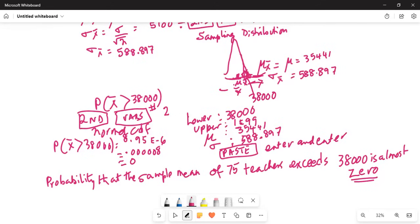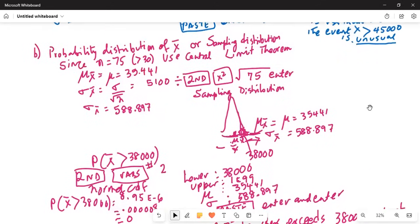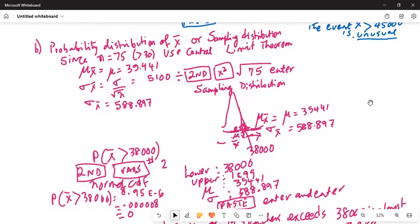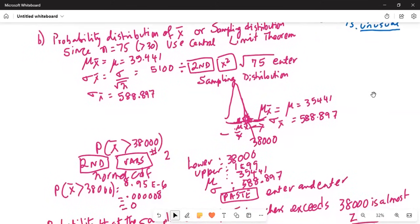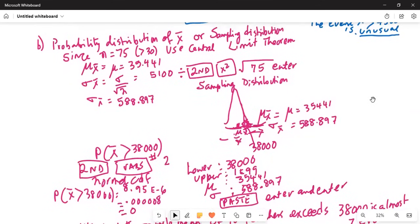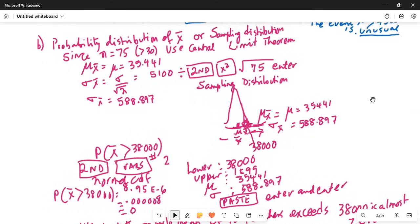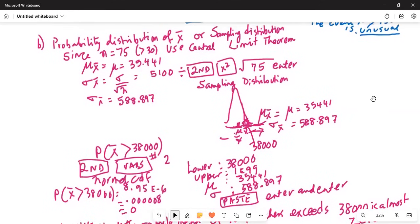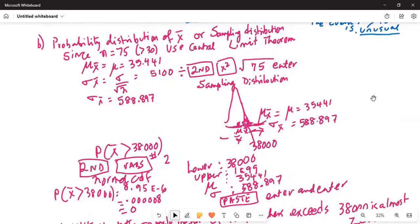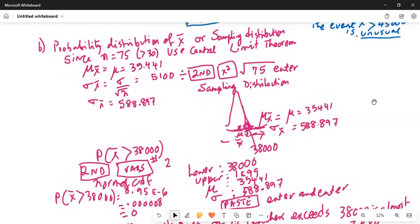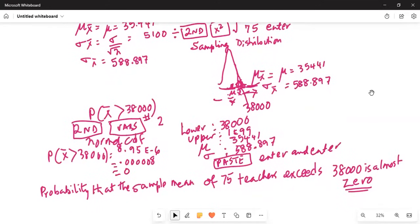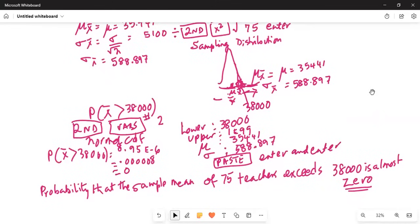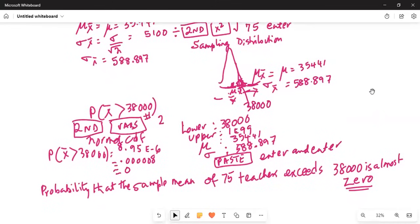So again, to summarize, what did we do in this one? This is where we have selected a sample of 75 students and we want to find the probability that the sample mean of 75 teachers' salary exceeds $38,000 - that means on the right of $38,000. So we have to use the sampling distribution of X bar. Mu X bar by central limit theorem is equal to mu, is equal to $35,441, and sigma X bar is sigma divided by square root of n, which is $588.897. Now we want to find out what is the probability to the right of $38,000. And the probability that the sample mean exceeds $38,000 is almost zero.